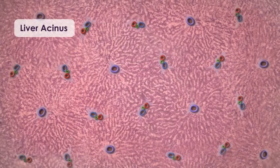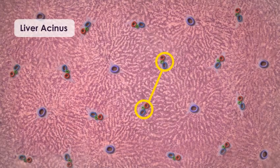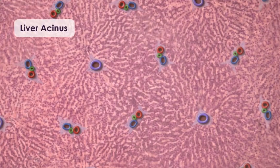To identify the acinus, find two adjacent portal triads—this makes the short axis. Next, find the closest central vein on either side of the triads—this is the long axis. The resulting shape is a diamond or oval. Blood still flows from the portal triad to the central vein, but within the shape of the acinus, the flow is from the center to the periphery.